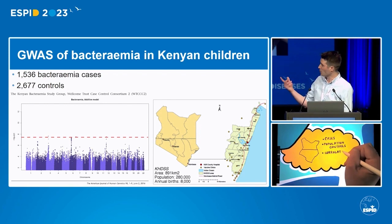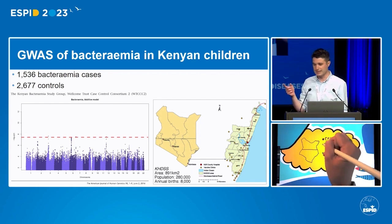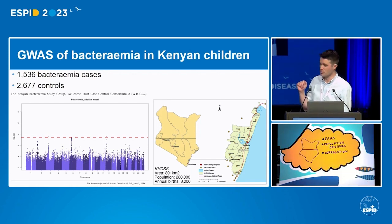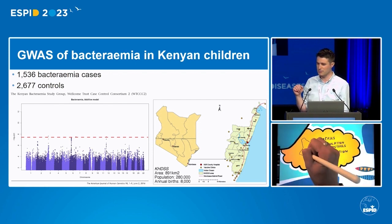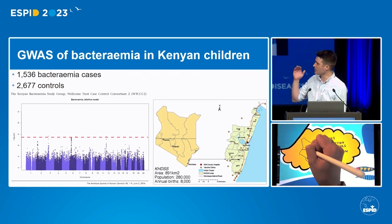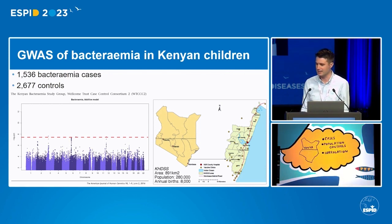What you can see on the left-hand side is a Manhattan plot. Each dot represents a SNP, and how associated it is with bacteremia is how high it plots on the y-axis, while the x-axis is the physical base pair position across the 22 human autosomes. What you're hoping to see are genetic loci that are at or above that red line — that's genome-wide significance.